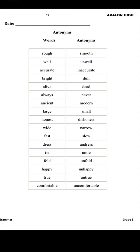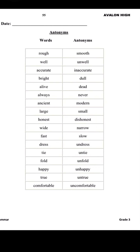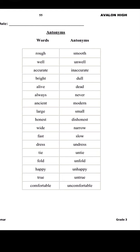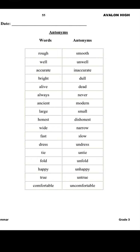There is a word 'rough' — rough ka opposite kya hoga? Smooth. Okay, in the same way you all have to learn this table. Well, unwell. Accurate, inaccurate. Bright, dull.